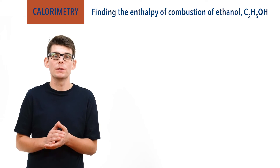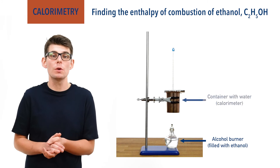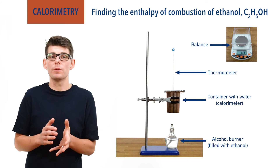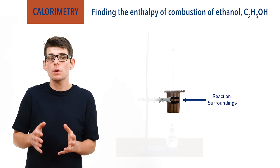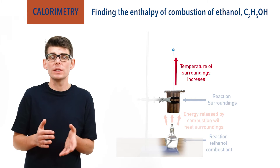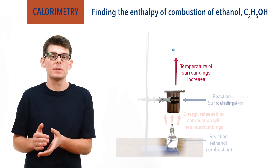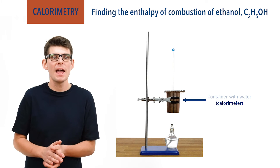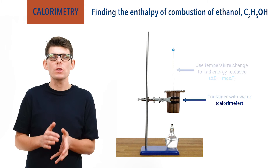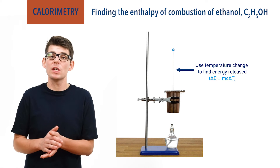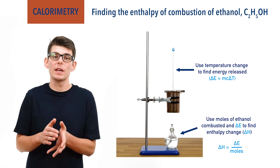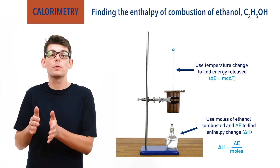To carry out this experiment we're going to need an alcohol burner filled with ethanol, a container with a known mass or volume of water, a thermometer and a balance. In this example we are using a container of water as the reaction's surroundings. As the ethanol combusts and releases energy, this energy will flow into the container of water and increase its temperature. The container used to hold the water is called a calorimeter — it's made of a highly conductive metal, in this case copper, and it's very thin, meaning as much energy as possible will flow into the water from the combustion reaction. By measuring the change in temperature of the water we can find out how much energy has been released by the ethanol combustion, and compare this to the moles of ethanol combusted to find the enthalpy of combustion.